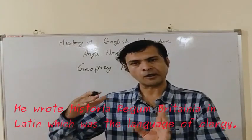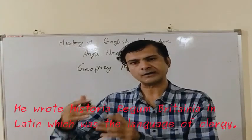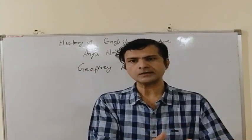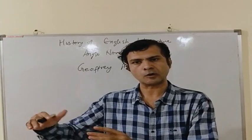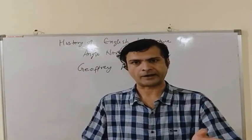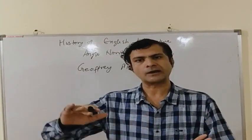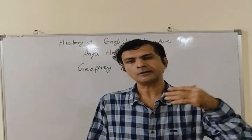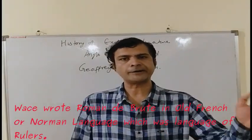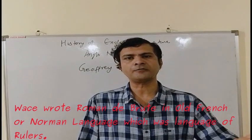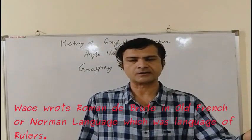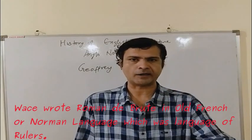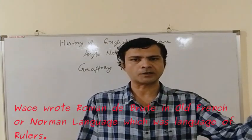The Latin language was the language of the clergy. It was not the language of the noble persons or rulers, and neither was it used by the common people of England at that time. The second important poet of the Anglo-Norman period was Wace, who wrote his book Roman de Brut in Old French, which is also known as the Norman language.